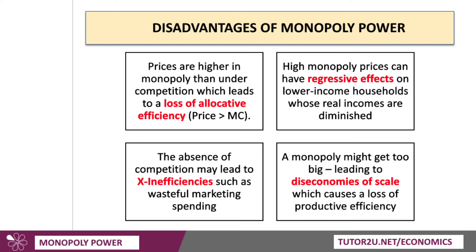The absence of competition in a market, if there's embedded market power, can lead to X-inefficiency, such as wasteful marketing spending. Businesses that don't really have to compete day to day will often spend huge amounts on advertising, on marketing, expensive accounts for their executives, first-class travel and so on. We call that X-inefficiency — costs are higher than they would be if the market was contestable.